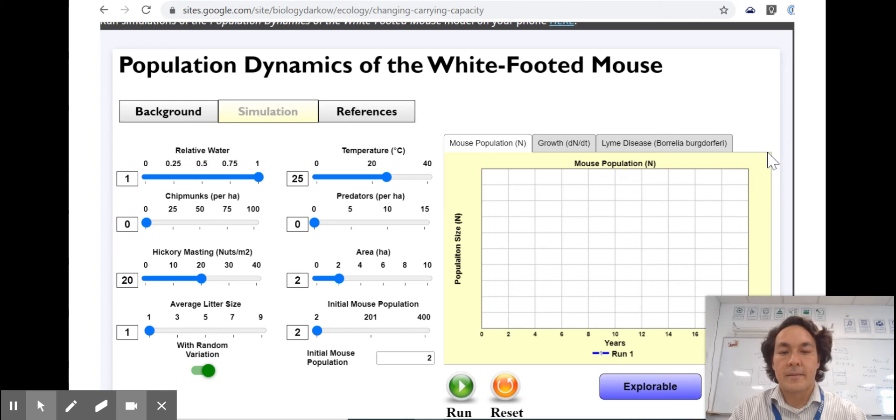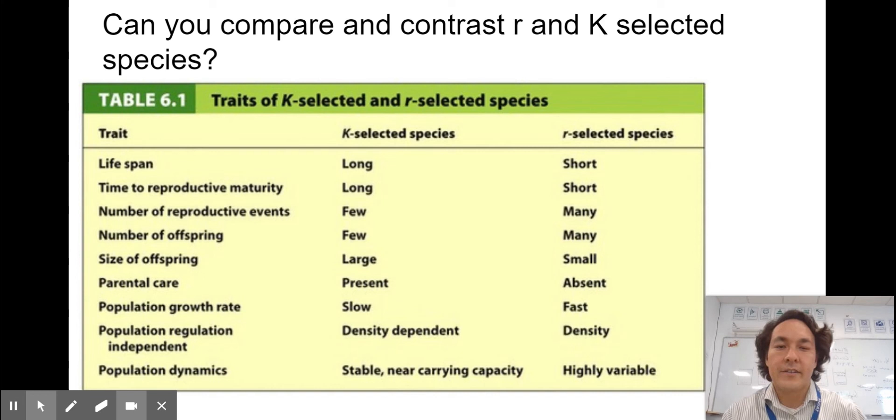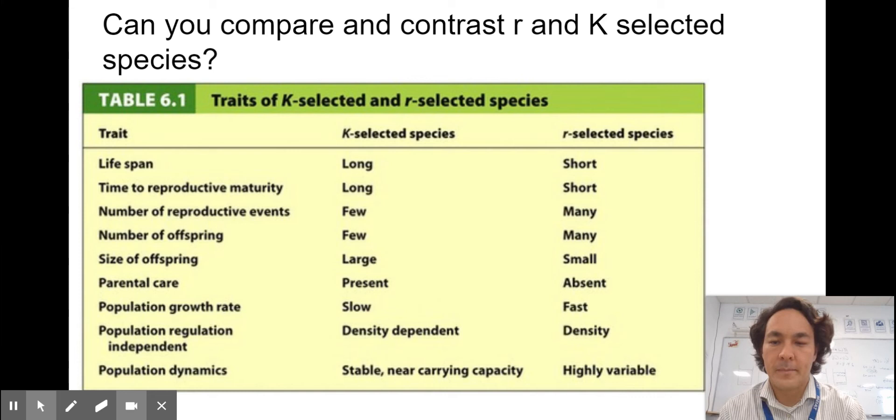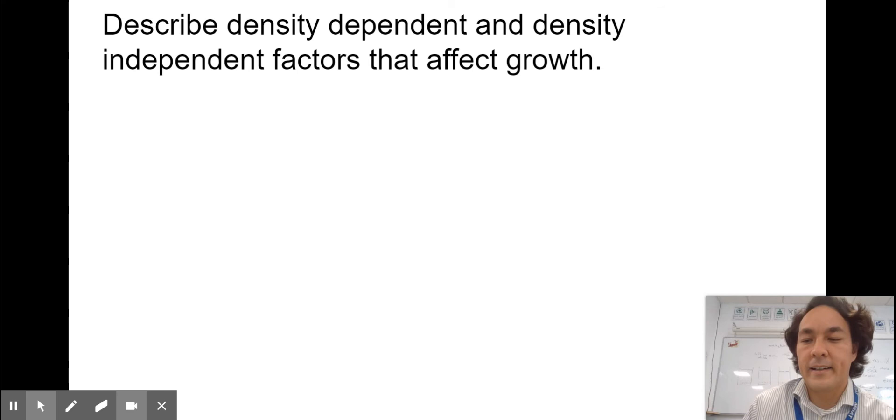Carrying capacity itself fluctuates depending upon the environment. How many organisms can be supported by the environment? Can you compare and contrast r and K-selected species? One's not better than the other. It's just a method or a way of reproducing and trying to continue on a species. R-selected species would be something like flies. They would have a short lifespan and a lot of babies. K-selected would be the opposite. This would be like humans.